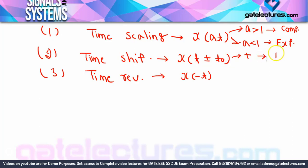For time shifting, if the sign is plus, the shift is to the left; if the sign is minus, the shift is to the right. The third operation — time reversal — is actually a special case of the first operation. If you put a = -1 in the scaling operation, you get time reversal.